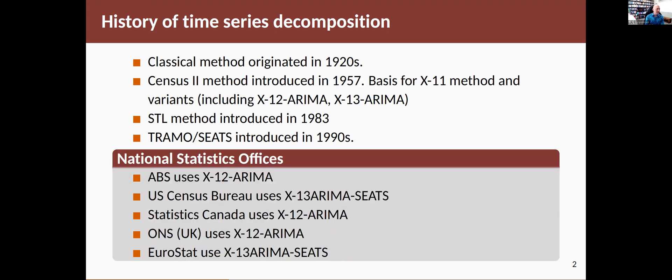Last I looked the national statistics offices around the world were all using one or other of these variations. Here in Australia the Australian Bureau of Statistics uses X12 ARIMA. The US Census Bureau is using a combination of X13 ARIMA with the SEATS developments from Europe. Statistics Canada I think is still using X12 ARIMA. The Office of National Statistics in the UK was using X12 ARIMA. And the European Statistics Agency was using a combination of X13 ARIMA and SEATS.